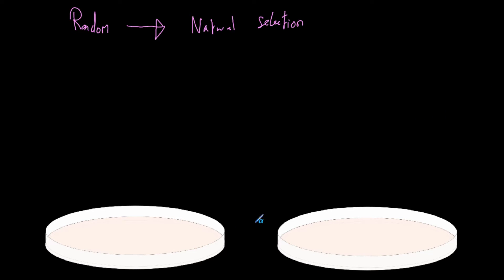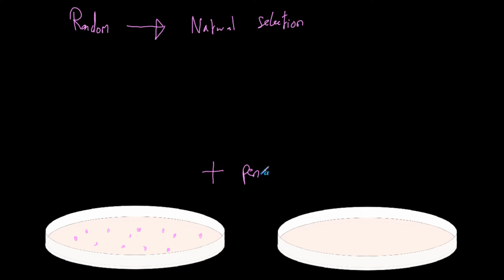So if we've got these two agar plates, these purple dots are going to represent bacteria. We've got loads of bacteria dotted around and they're all fine — all of these colonies can all survive. Now all of these bacteria are mutating all the time, but we don't know that because there's no way of us realising which ones have mutated. Now what if we add an antibiotic — let's say penicillin? We add penicillin to this agar plate and then move all these bacteria over to let them grow.